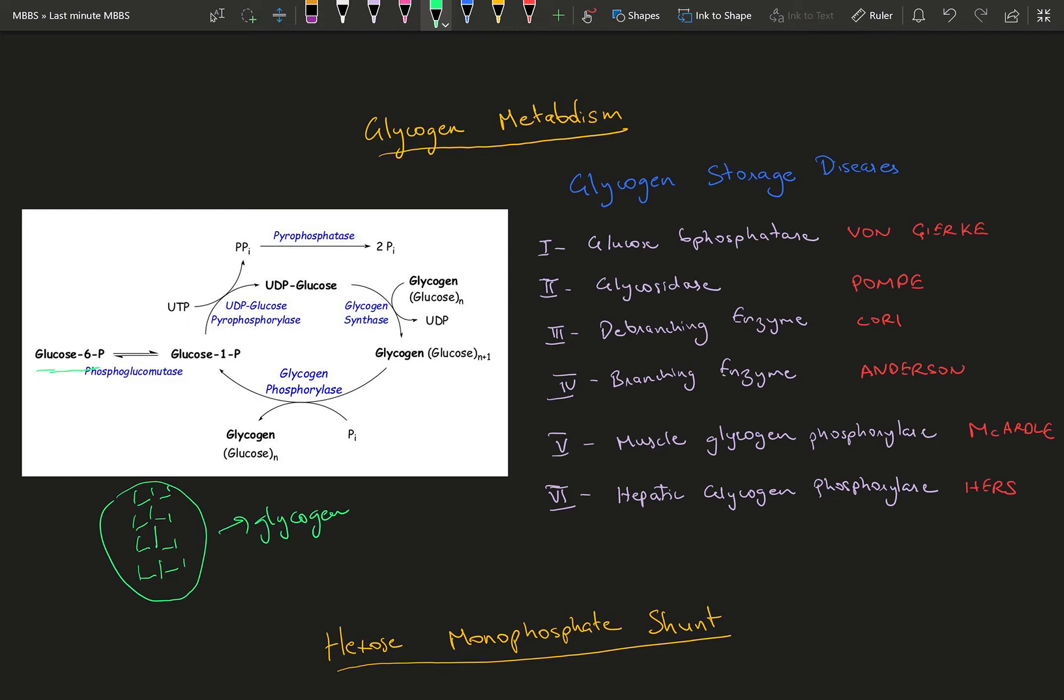What's more important are glycogen storage diseases. These diseases are named. There are six of them: Von Gerke, Pompey, Corey, Anderson, McCardell, and Herz. You need to know the enzymes which are being deficient in each of these conditions.